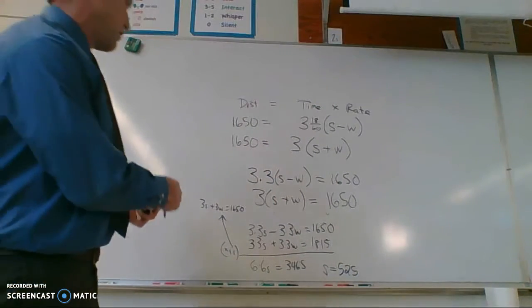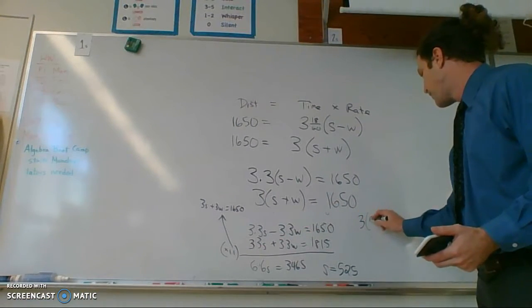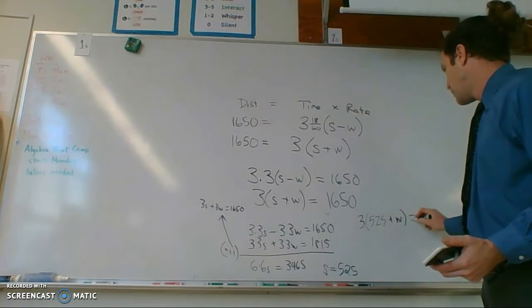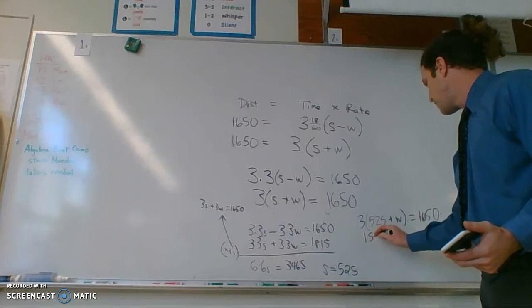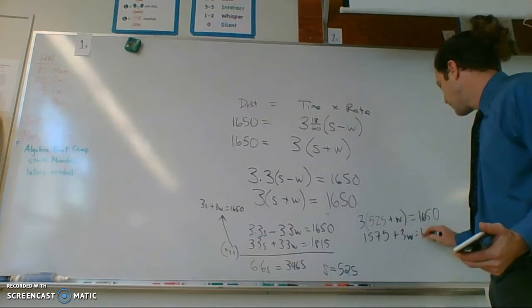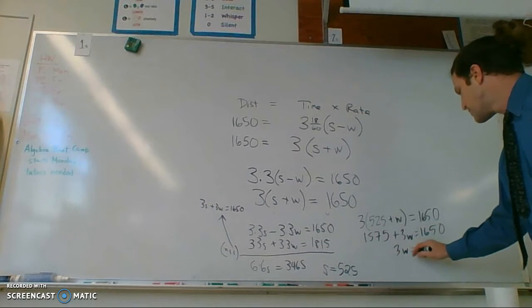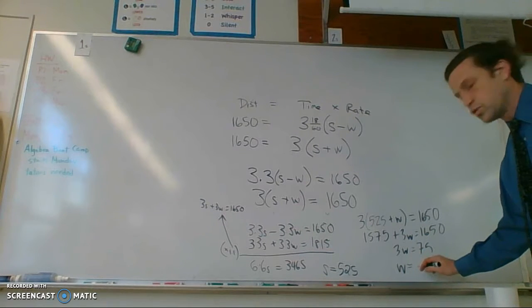And then I plug that in to one of these equations, perhaps this one. I'll get 3 times 525 plus W equals 1650. This turns out to be 1575 plus 3W equals 1650. So 3W equals 75, subtracting from both sides, and W equals 25.